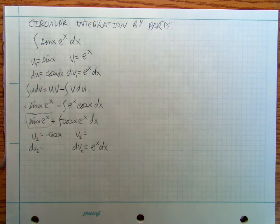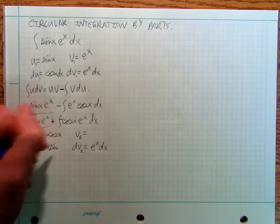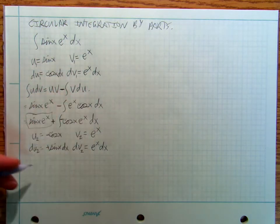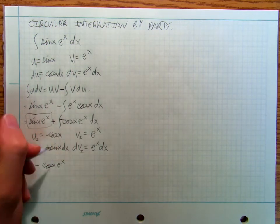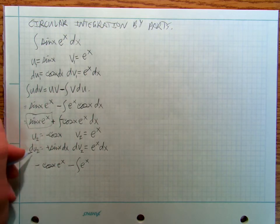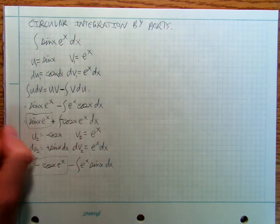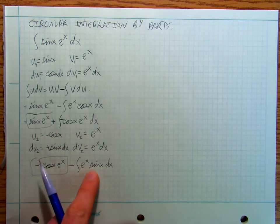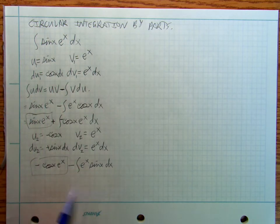So dv2 is e to the x dx, giving v2 equals e to the x. The derivative of negative cosine x is positive sine x. Applying the formula again, I get negative cosine x times e to the x, minus the integral of e to the x times sine x dx. And you notice — that looks familiar. That looks like where I started from.